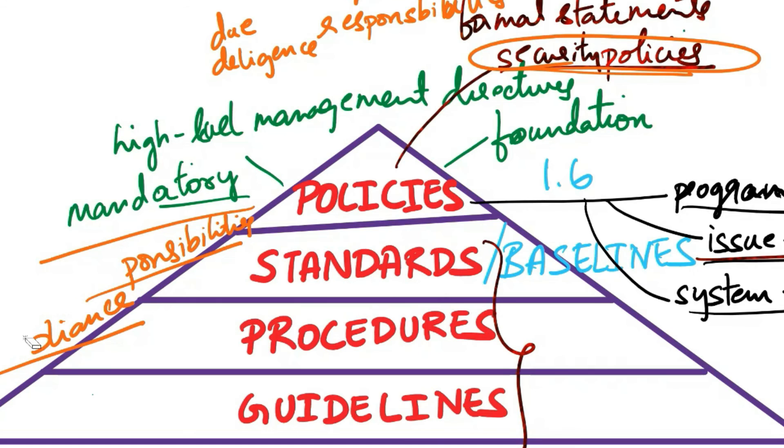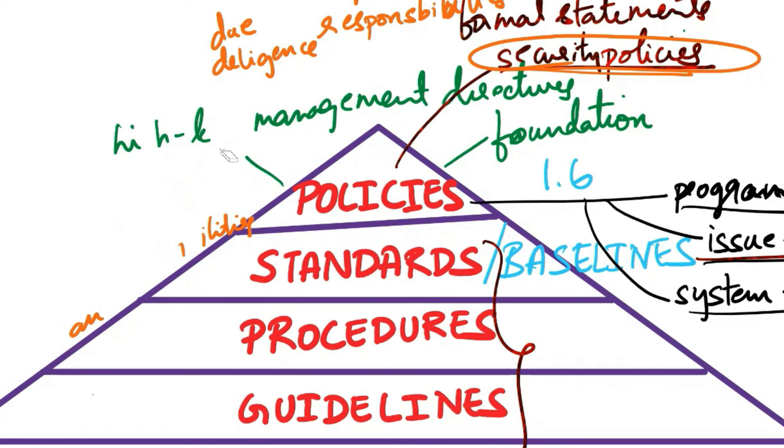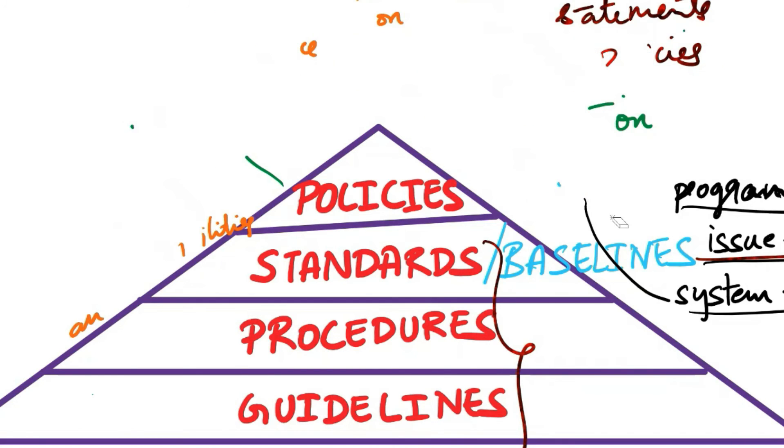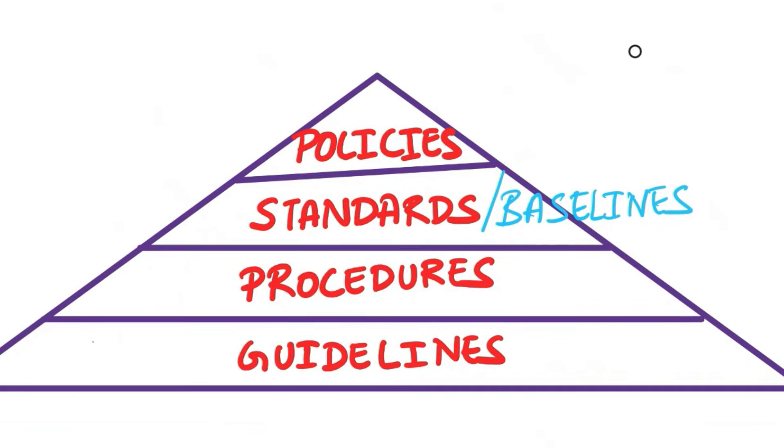It is crucial to recognize that policies, guidelines, baselines, standards, and procedures should not be treated as an afterthought but as integral elements for administering a secure environment effectively. Creating a single document containing aspects of all these elements is discouraged as each structure serves a distinct specialized function. Keeping them separate offers several advantages like accommodating different security classification levels, facilitating easier updates for affected material, and aiding in maintaining a secure environment through comprehensive planning, design structure, and oversights.